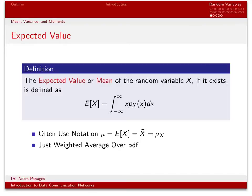The definition of the mean of a random variable is given here. There's some different notation we use. Sometimes we use E[x], meaning the expected value of x, which is synonymous with mu. Some books use x-bar, and some use mu with a subscript x, just to indicate this is the mean of the random variable x. The definition itself is very simple: we take the probability density function of our random variable x, multiply it by the value x, and integrate over the whole real line.